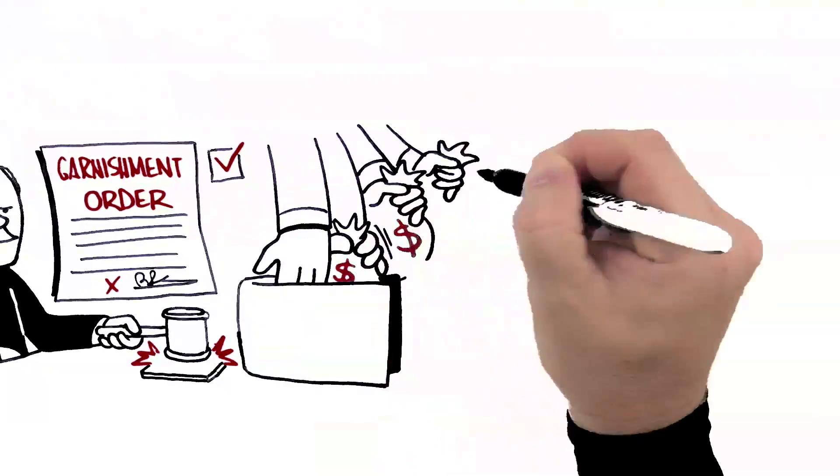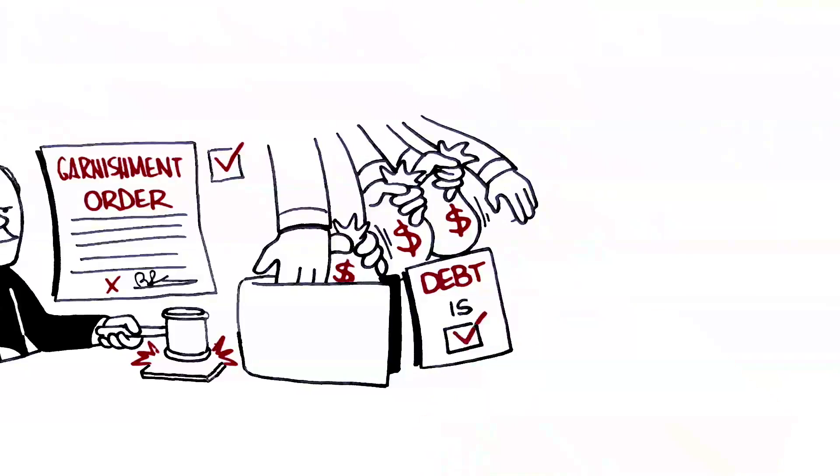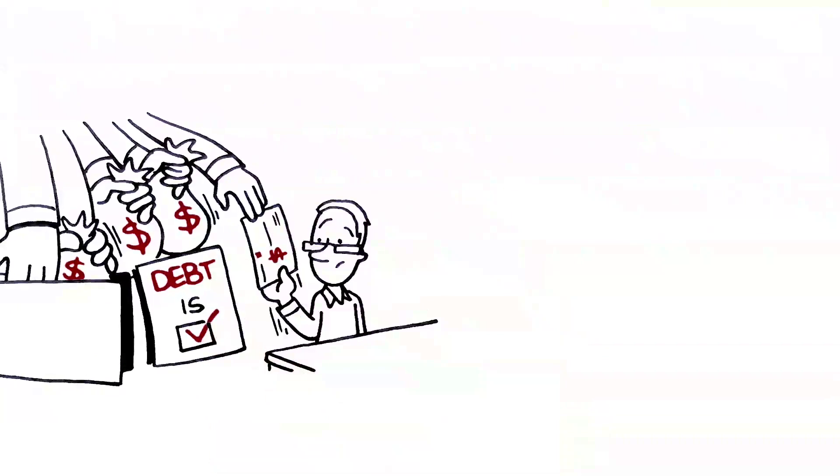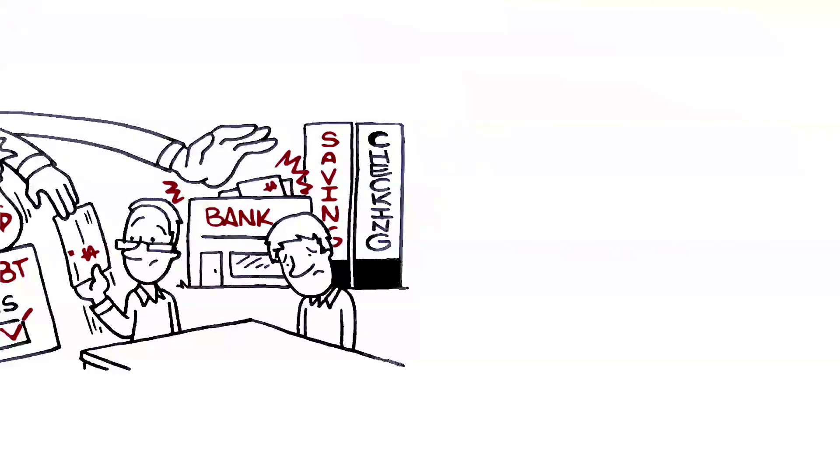A garnishment order lets lenders take money until a debt is satisfied. They can go to Ted's employer and have money deducted from his pay. Embarrassing. They can go to his bank and drain his savings and checking accounts, too.